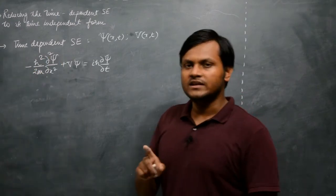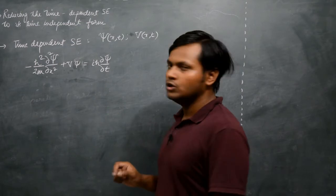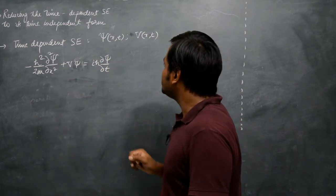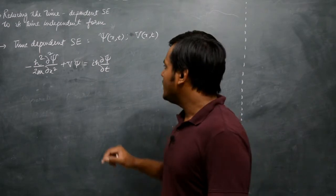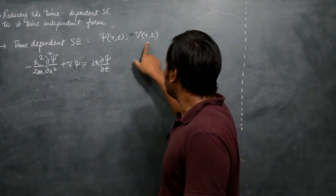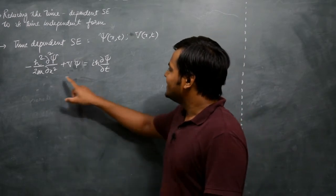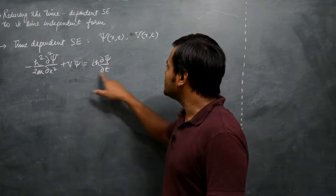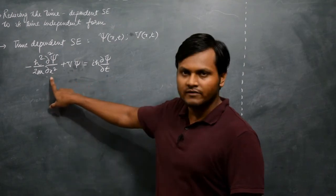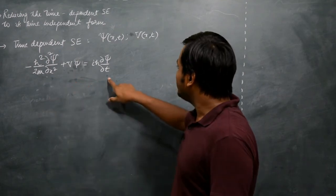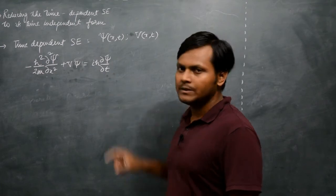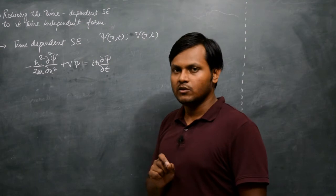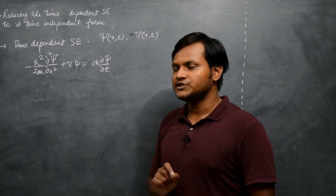As you can see, in the time-dependent Schrödinger equation, the wave function solution psi is actually a function of both space and time. The potential itself is also a function of x and t. This is a partial differential equation which contains two partial derivatives — one is a second-order partial derivative with respect to x and the other is a first-order partial derivative with respect to time.